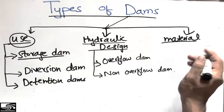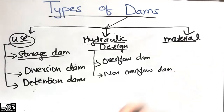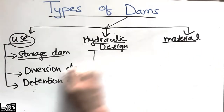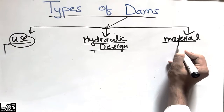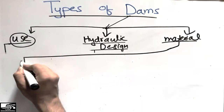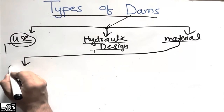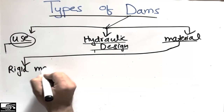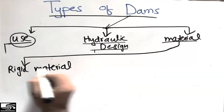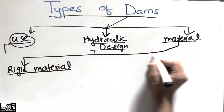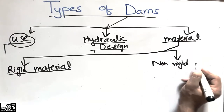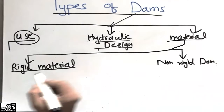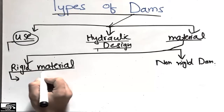Now the classification of dams according to the material — what type of material is used in the dam. According to material, there are two classifications. One is the rigid dam, in which rigid and stiff materials are used. The other type is the non-rigid dam.